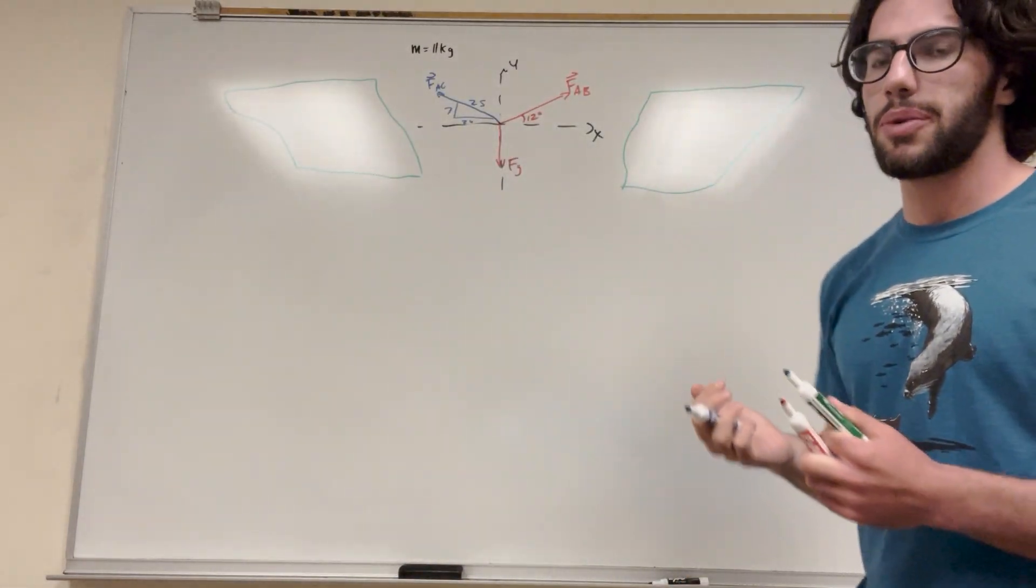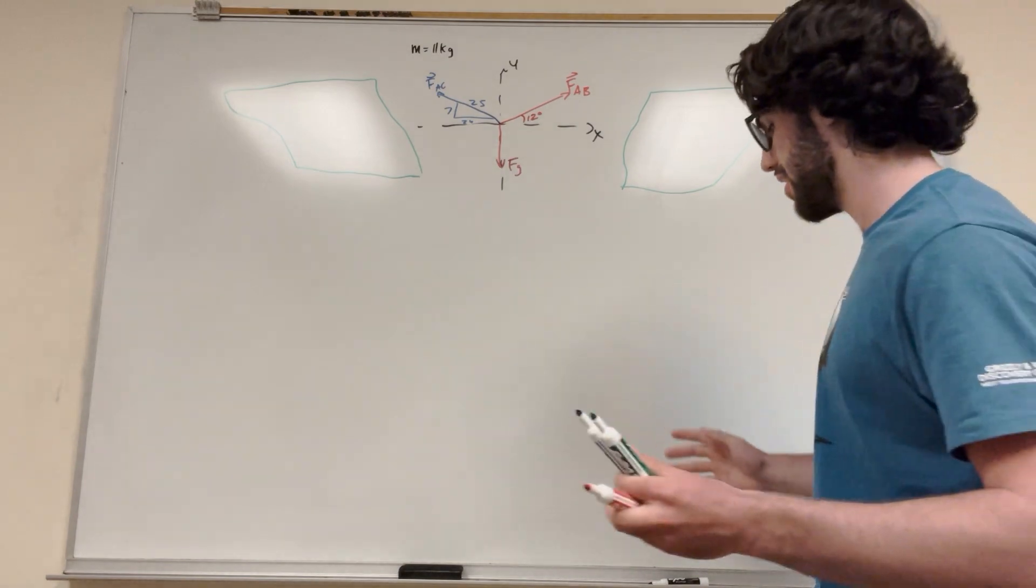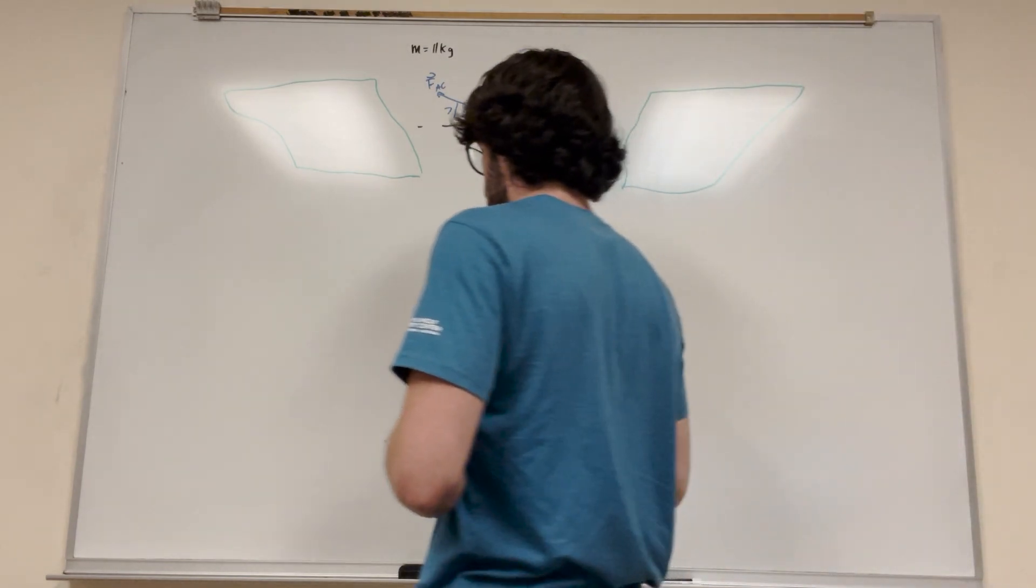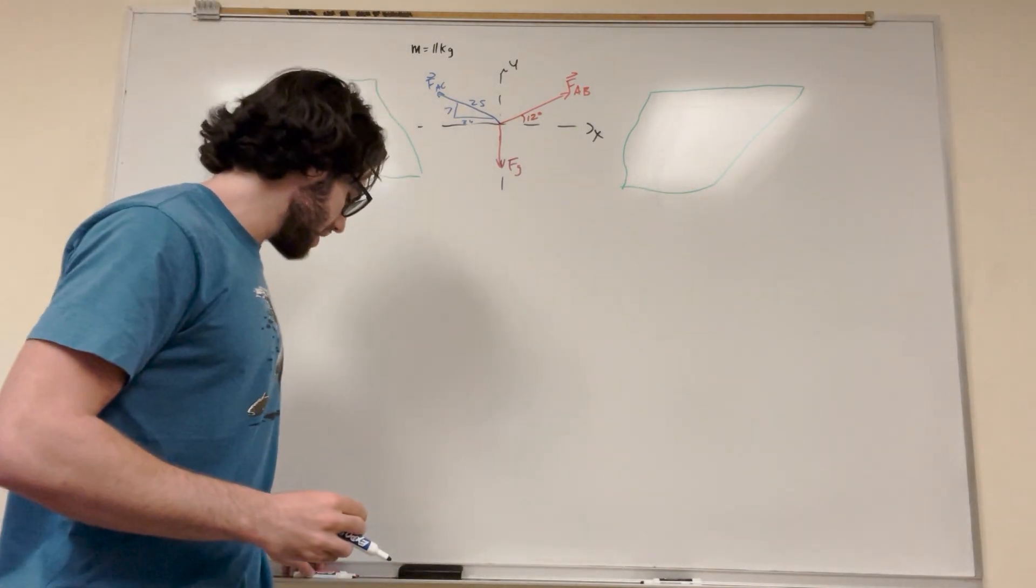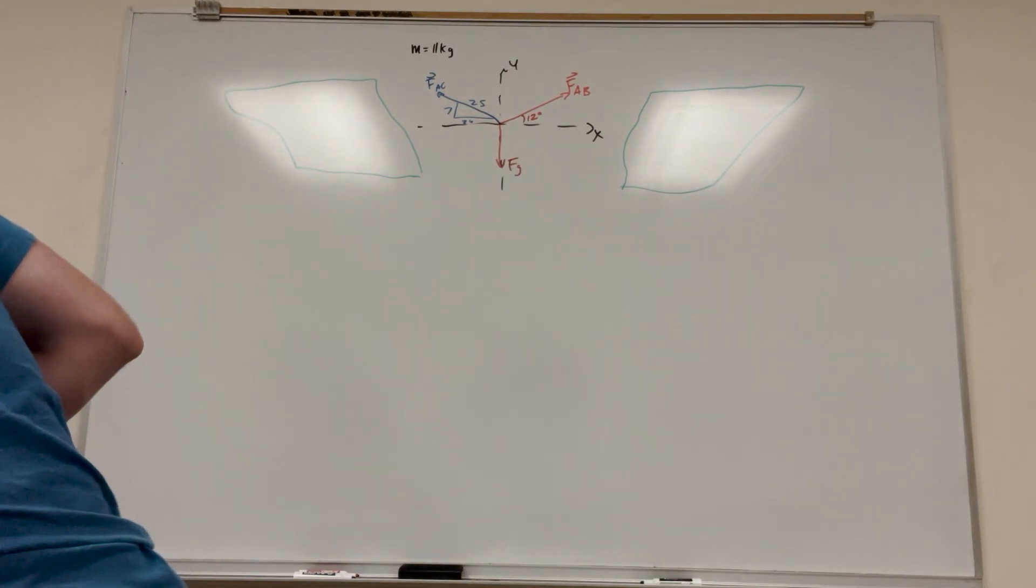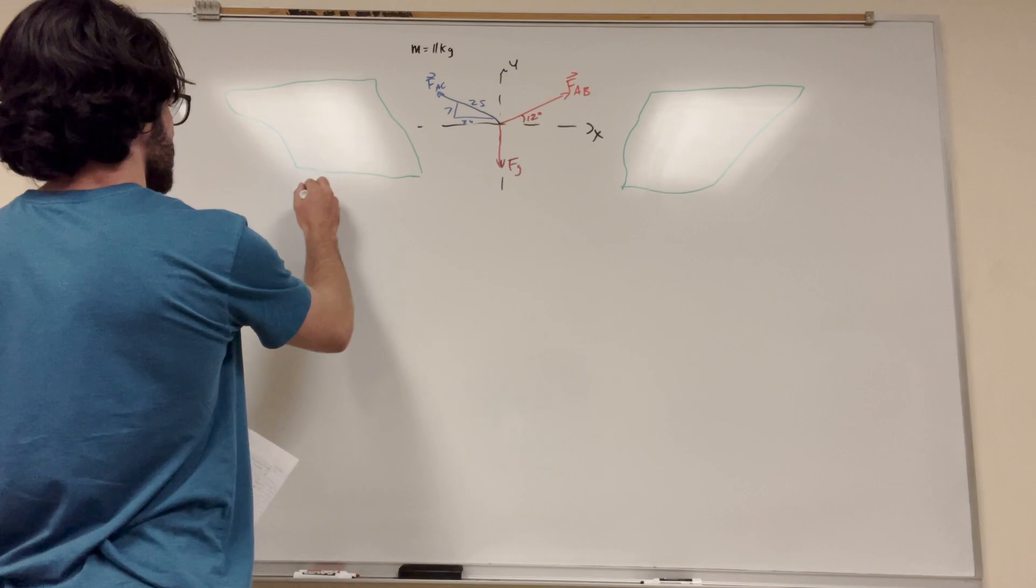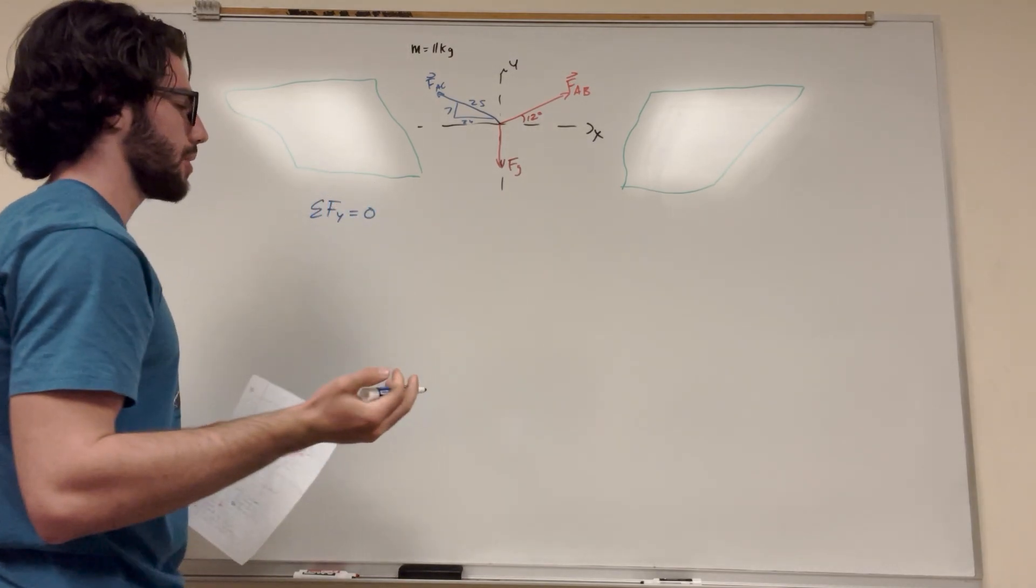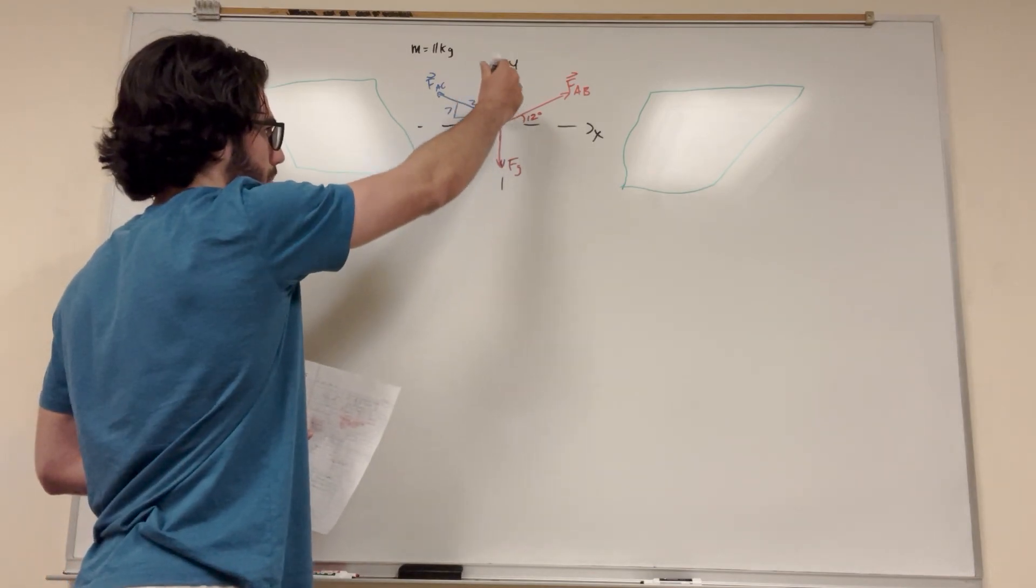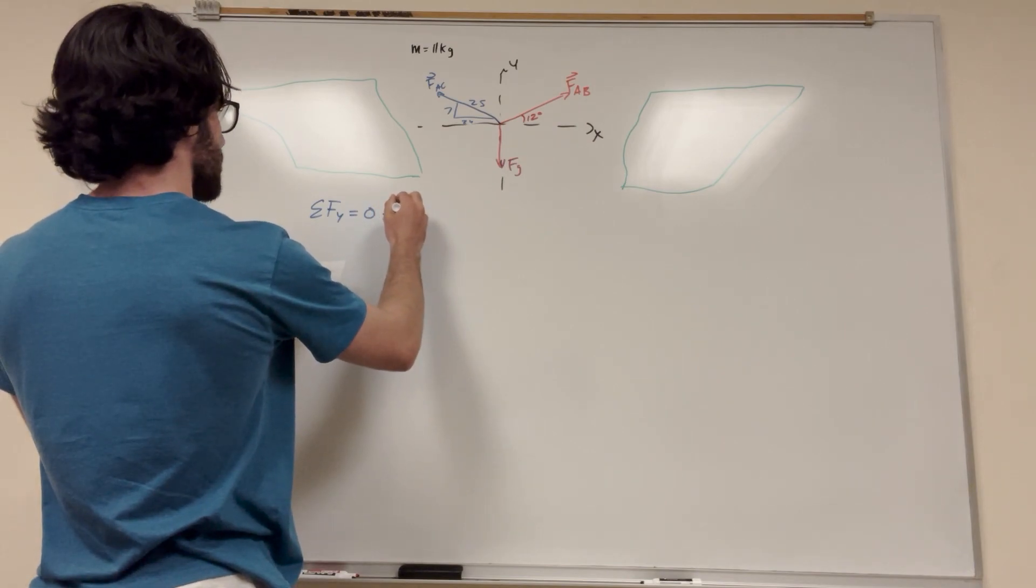So we're at equilibrium. When we're at equilibrium, we can write two equations in two dimensions. If we're in three dimensions, we can write three. So our first one, what are we going to start with? Let me get my paper. So we're going to start with the sum of forces in the Y direction. So let's write it out. The sum of forces in the Y direction is equal to zero. We know that the amount of force pulling up is the same amount of force pulling down because it's not moving. There's no acceleration.